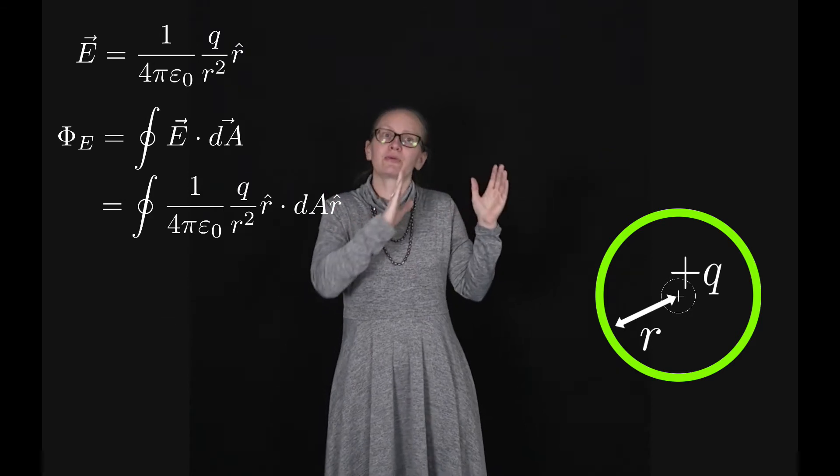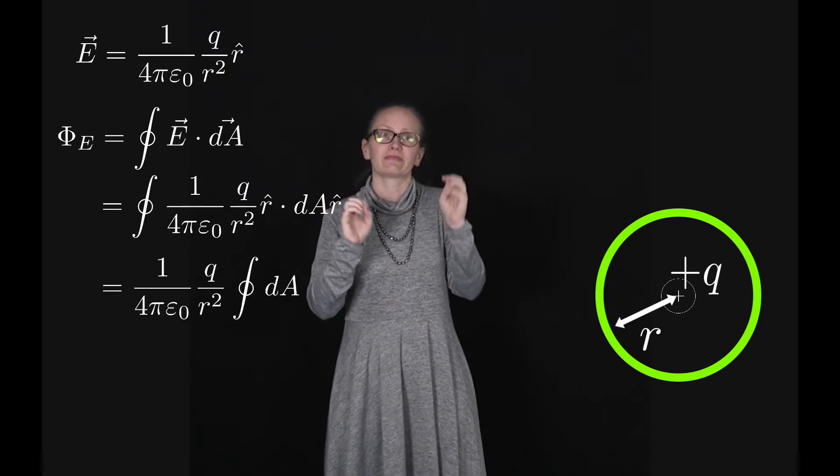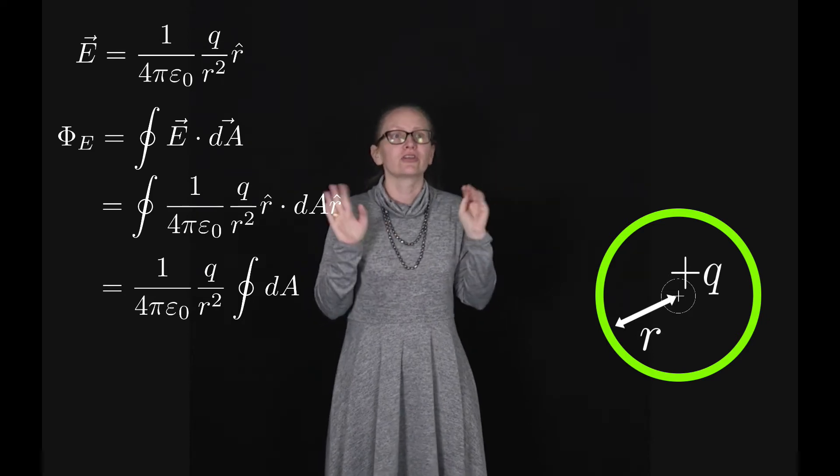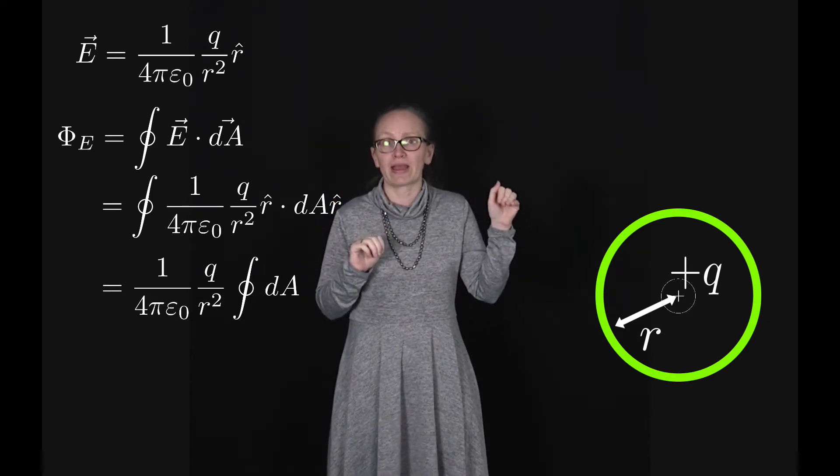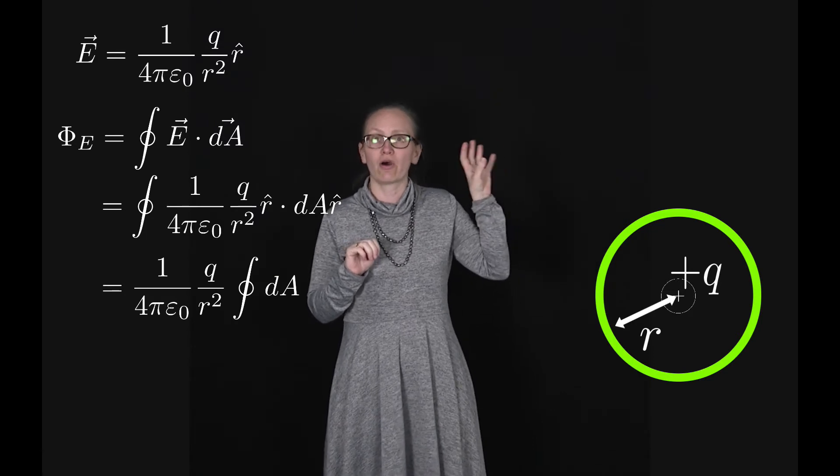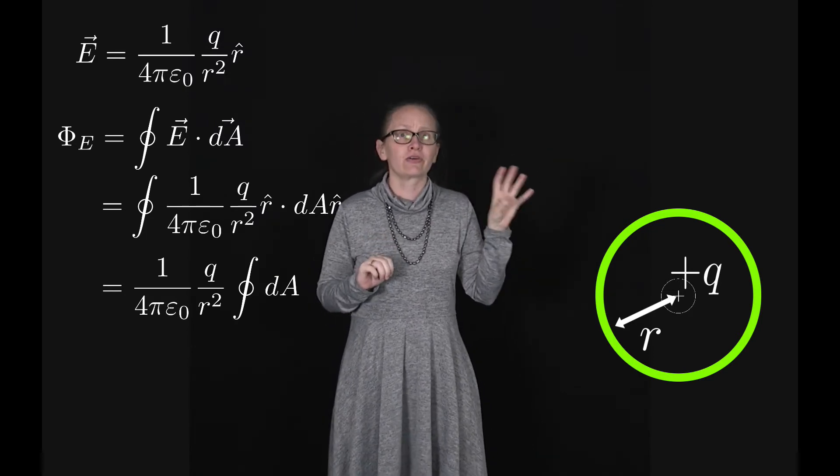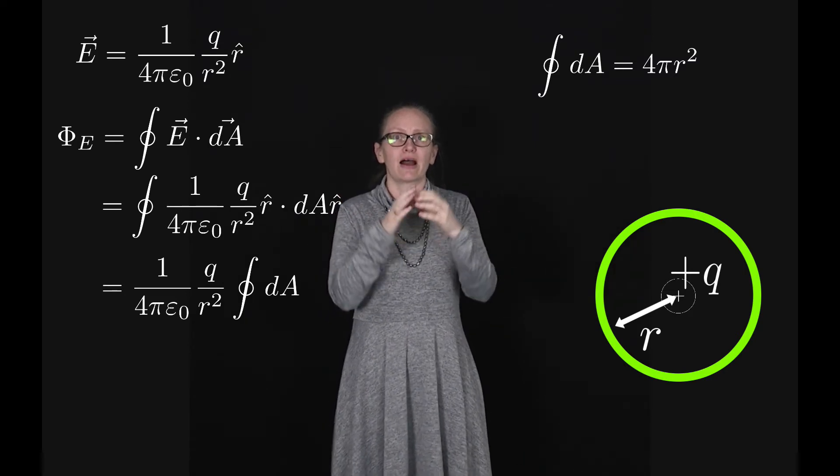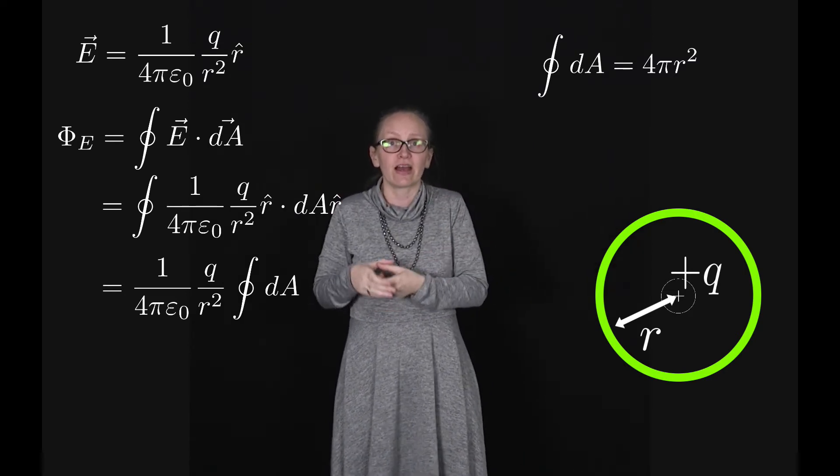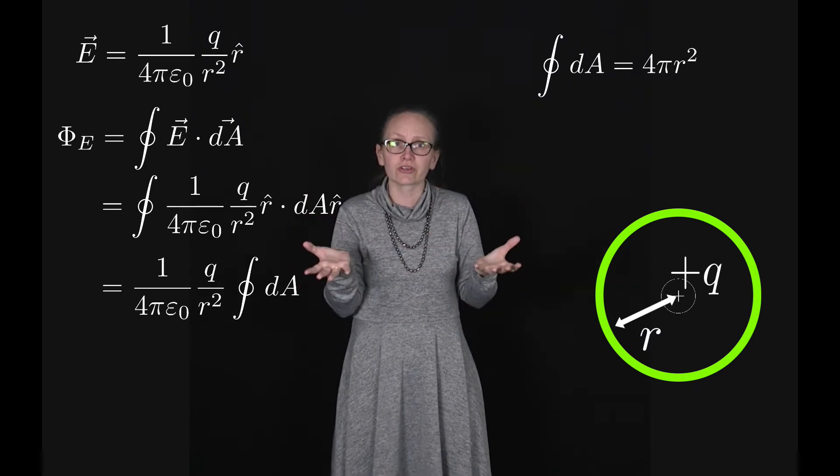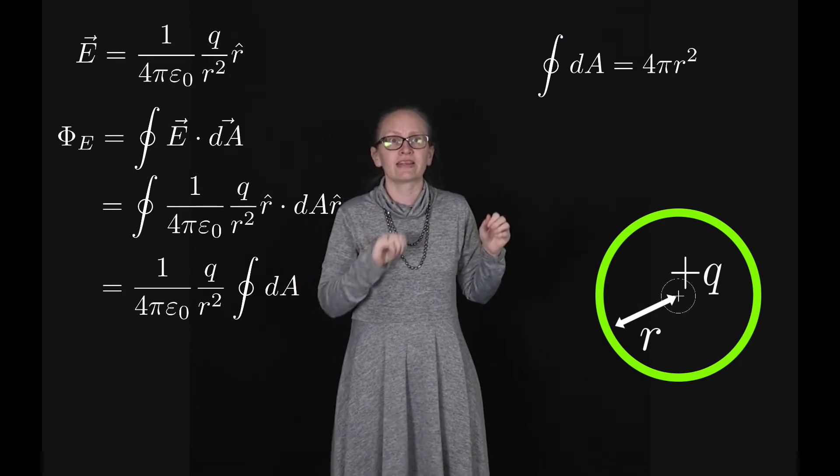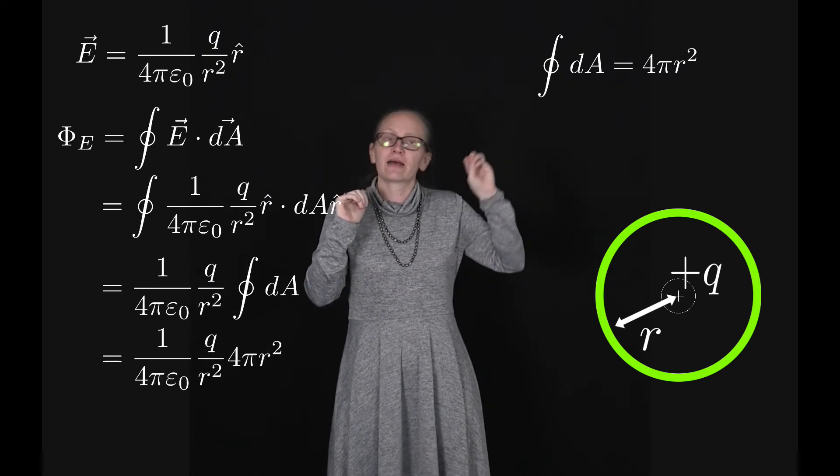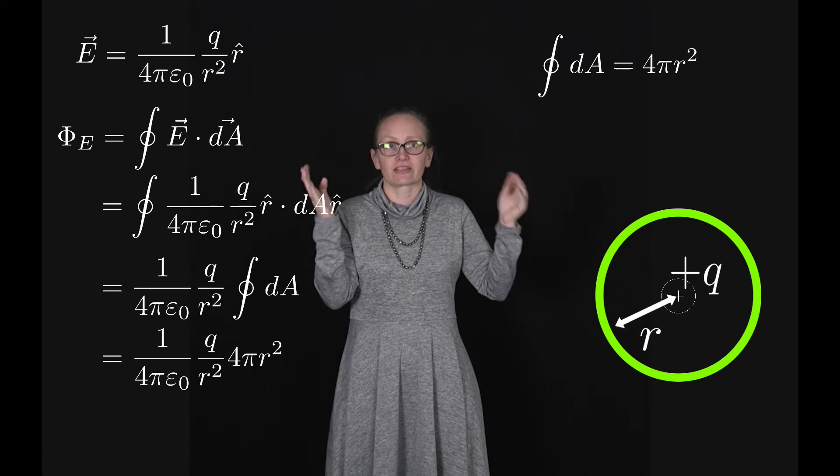This is then equal to—we can pull all the constants out the front and remember that r is a constant because it's the radius of the sphere which we're not changing. So this is equal to 1 over 4π epsilon naught Q over r squared times the integral of dA. Now the integral of dA physically means the surface area. We're summing up all the little incremental bits of the surface area and when we do that we get the total surface area. So we can write this as 1 over 4π epsilon naught Q over r squared times 4π r squared which is the surface area of a sphere.